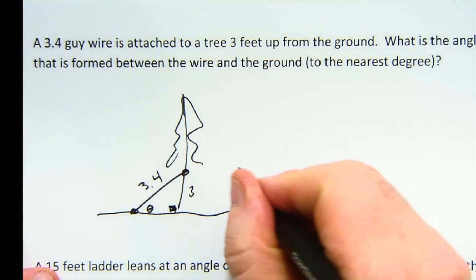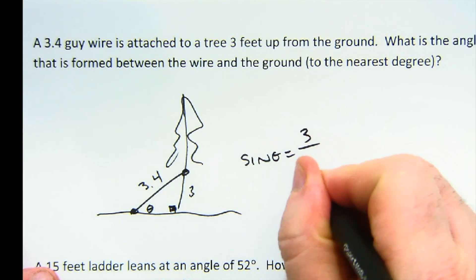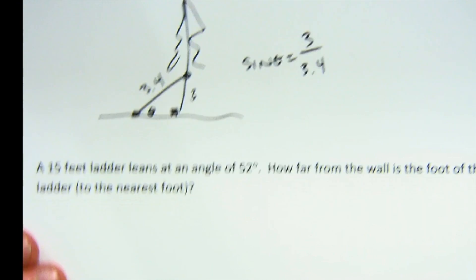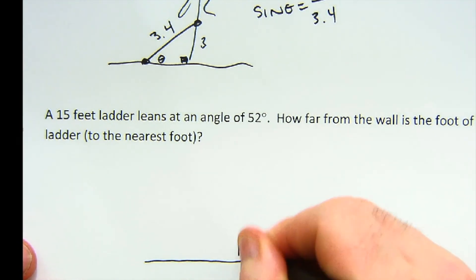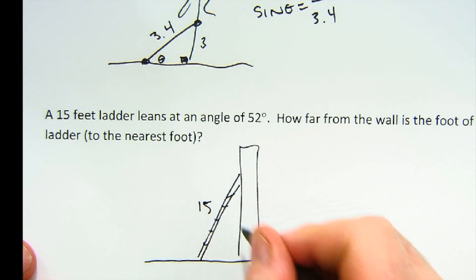So again, here we are. We have the sine of my angle, that's the opposite over its hypotenuse. That's how I would solve that problem. A ladder, a 15-foot ladder, is leaning against some sort of wall. Here's my ladder. It's 15 feet. It leans at an angle of 52.